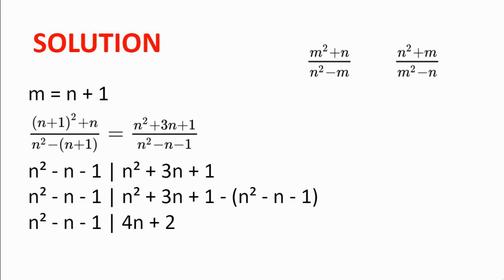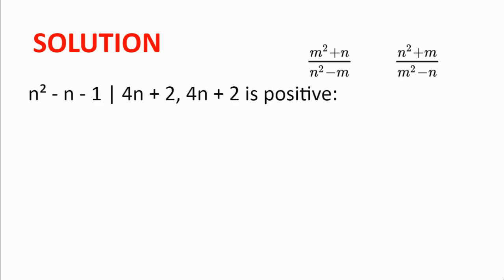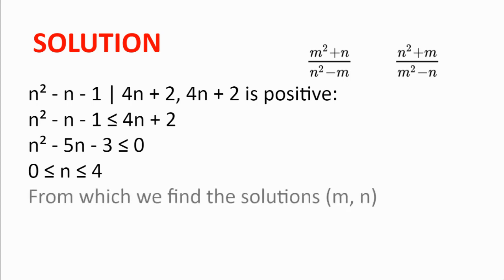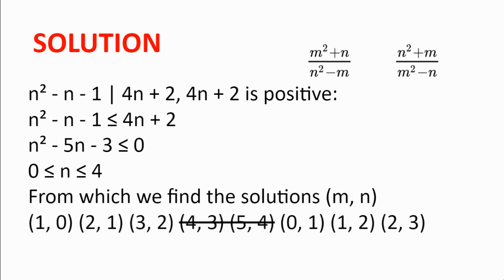We split into two cases based on the sign of 4n + 2. When 4n + 2 is positive, regardless of the sign of n² - n - 1, it must be less than or equal to 4n + 2. This gives n² - 5n - 3 ≤ 0. Using the quadratic formula, this holds for integer values n = 0, 1, 2, 3, or 4. Checking these, the valid solutions (m, n) = (n+1, n) are (1, 0), (2, 1), and (3, 2).